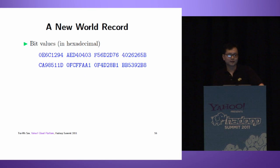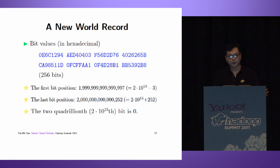Here is our new world record: 0E6C12944 etc. We have 256 bits total. The first bit's position is 2 quadrillion minus 3, the last bit's position is 2 quadrillion plus 252. The 2 quadrillionth bit of Pi is 0. 2 quadrillion is 2 times 10 to the 15.